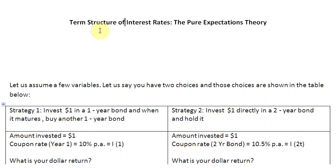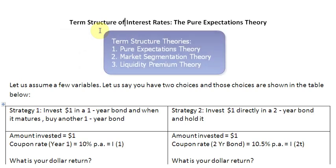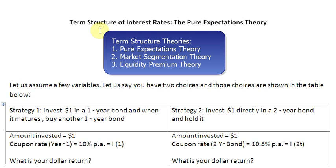There are three competing theories which seek to explain these three term structure facts. Theory number one is pure expectations. Theory number two is market segmentation, and theory number three is liquidity premium.